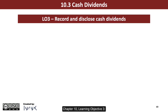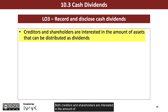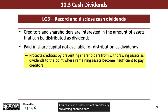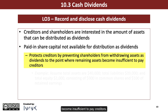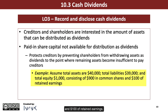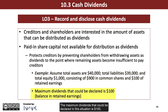Chapter 10 Learning Objective 3: Record and Disclose Cash Dividends. Both creditors and shareholders are interested in the amount of assets that can be distributed as dividends. The paid-in share capital is not available for distribution as dividends. This restriction helps protect creditors by preventing shareholders from withdrawing assets as dividends to the point where remaining assets become insufficient to pay creditors. For example, assume total assets are $40,000, total liabilities $39,000, and total equity is $1,000, consisting of $900 in common shares and $100 of retained earnings. The maximum dividends that could be declared in this situation is $100, the balance in retained earnings.